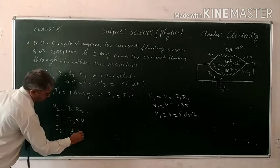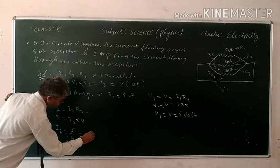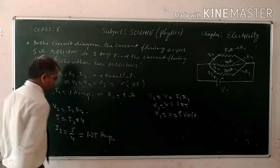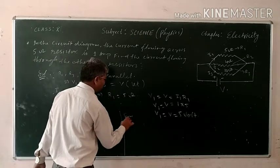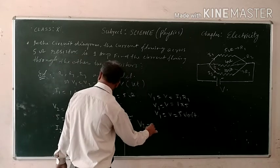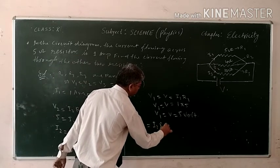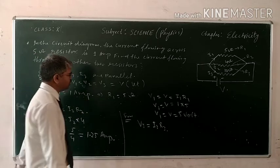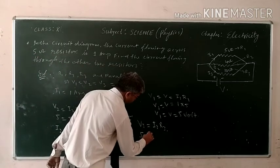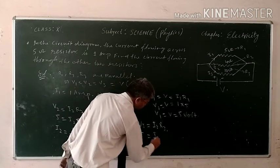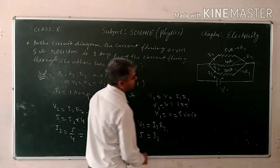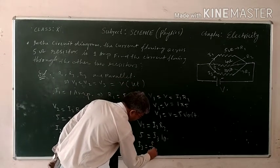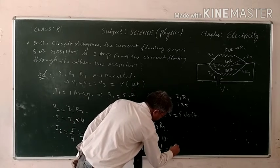So I2 is equal to 5 upon 4, which is equal to 1.25 ampere. Similarly, V3 is equal to I3 times R3. What is the value of V3? V3 means V1, that is also 5 volt. And I3 we have to calculate and R3 is given 10 ohm. So I3 is equal to 5 upon 10, which is equal to 0.5 ampere.